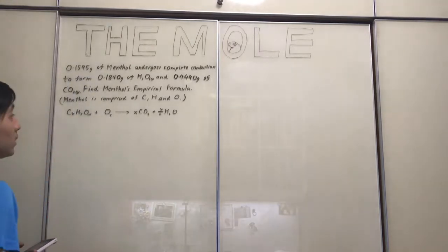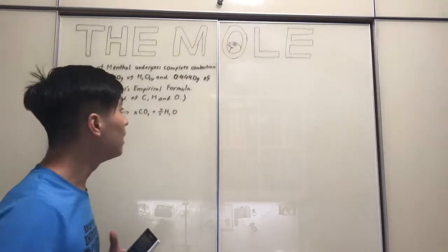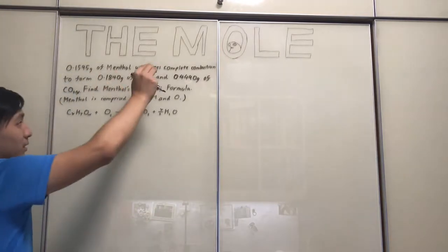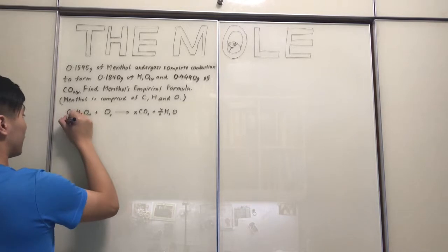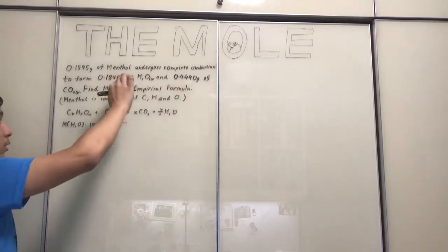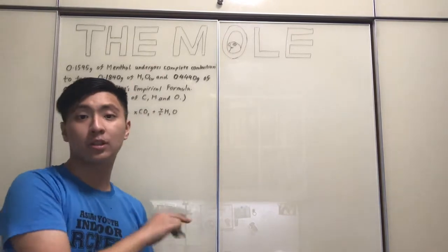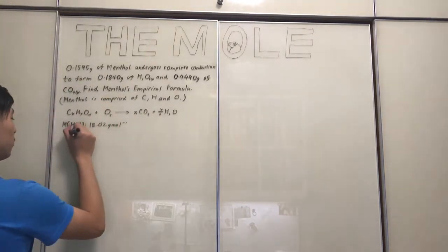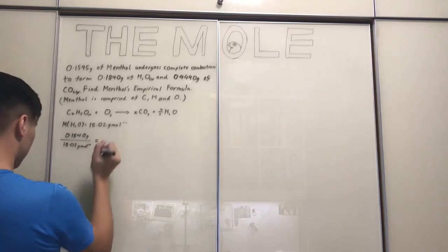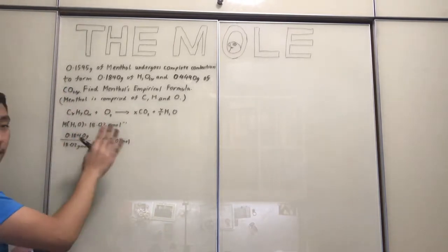So, in order to tackle the empirical formula given this kind of data, what we can do is work our way backwards — determine the number of moles of products and then find the empirical formula of the reactants. Let's start with water. The molar mass of H2O is 18.02 grams per mole. We also know the mass of water that formed is 0.1840 grams, so 0.1840 divided by 18.02 gives us 0.0102 moles of water.